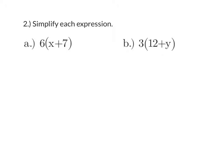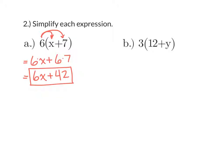Since we're going to be using the distributive property in the equations we're going to solve, let's practice using it. If I have 6 times (x + 7), we have to distribute the 6 to both the x and the 7. We'll do 6 times x and then 6 times 7. 6 times x is 6x and 6 times 7 is 42, so that's the expression we get.